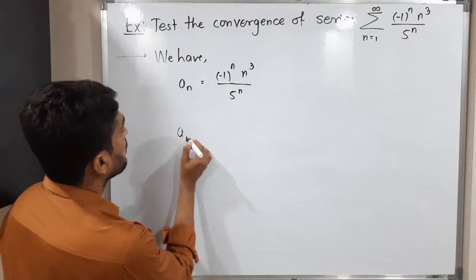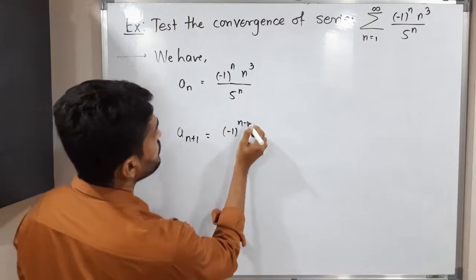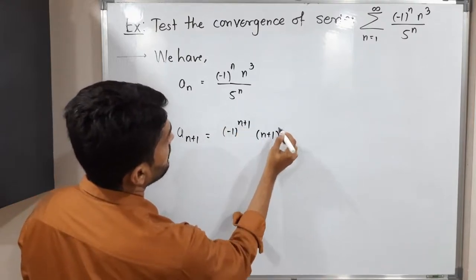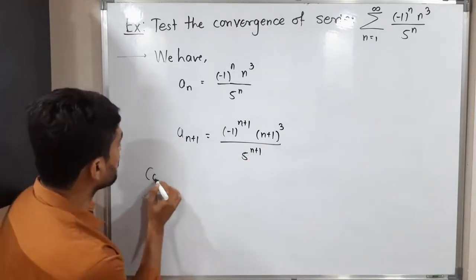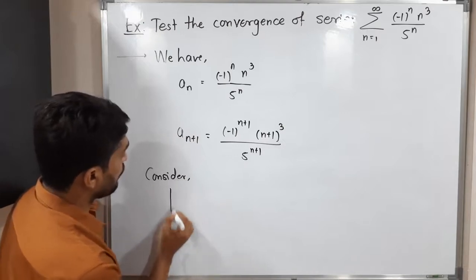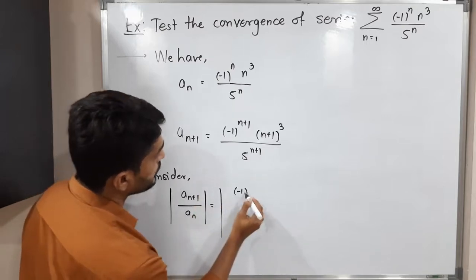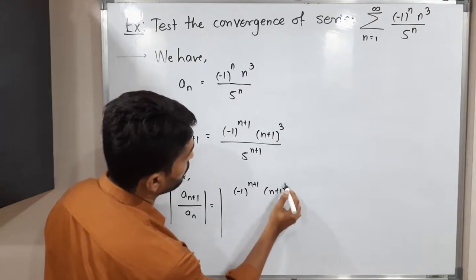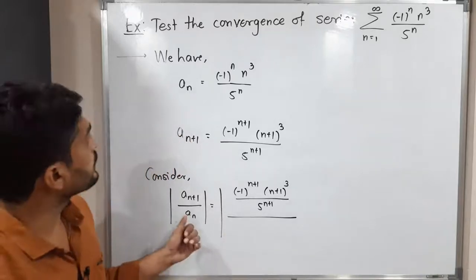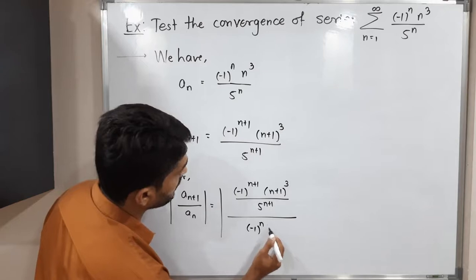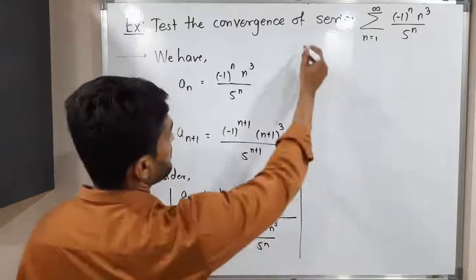In the ratio test we need a_(n+1). To find a_(n+1), we replace n by n+1: it becomes (-1)^(n+1) · (n+1)³ / 5^(n+1). Now let us consider the ratio |a_(n+1) / a_n|. In the numerator we have (-1)^(n+1) · (n+1)³ / 5^(n+1), and in the denominator a_n is (-1)^n · n³ / 5^n.